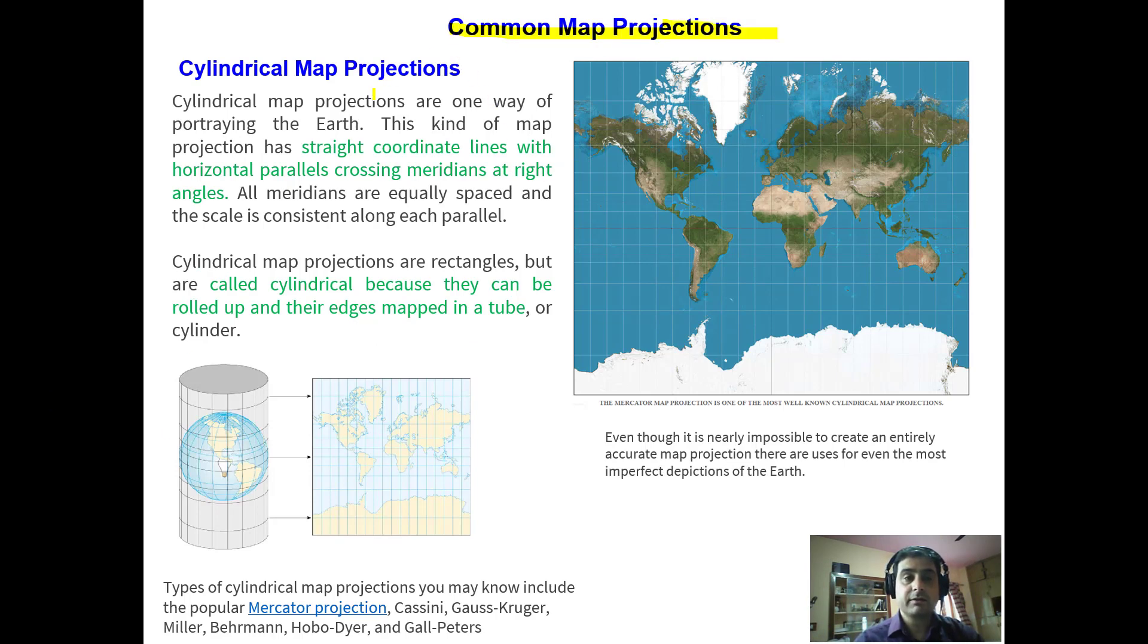Now what are the common map projections? We have cylindrical map projection. You can see this is the cylinder and globe put inside and if a vertical cut is given to the cylinder, the globe can be rolled out on a plane surface like this. This kind of map projection, cylindrical map projection, has straight coordinate lines with horizontal parallels crossing meridians at right angles as you can see here. Cylindrical map projections are rectangles but are called cylindrical because they can be rolled up and their edges mapped in a tube or cylinder.